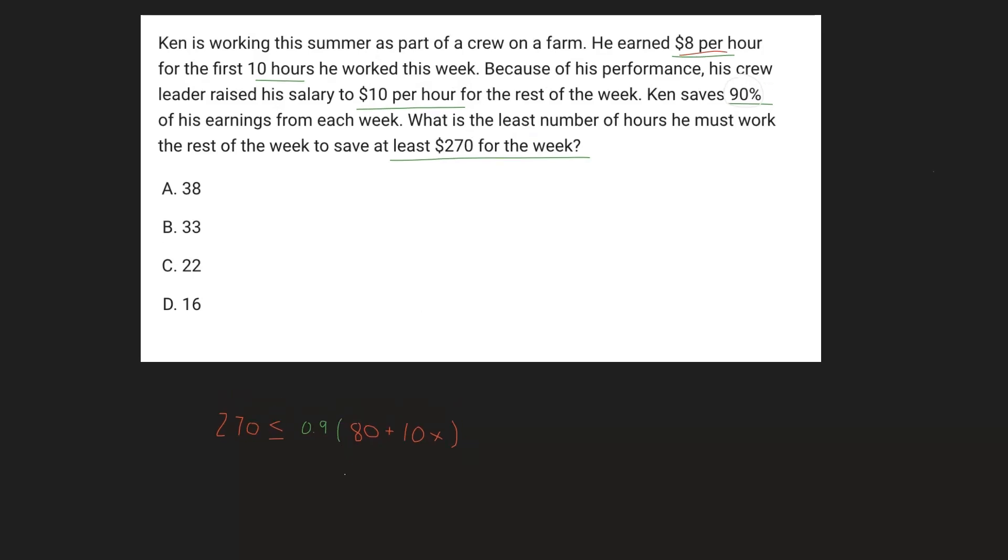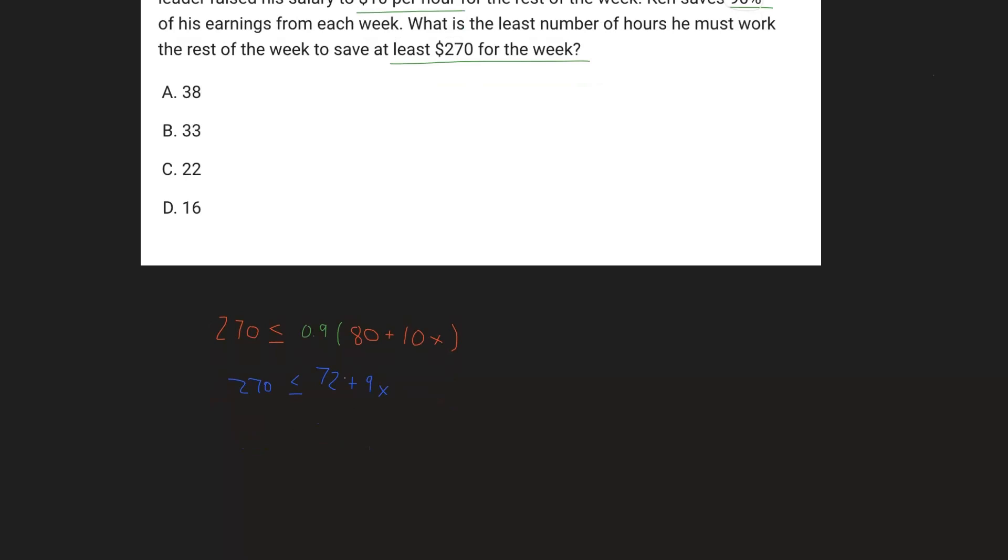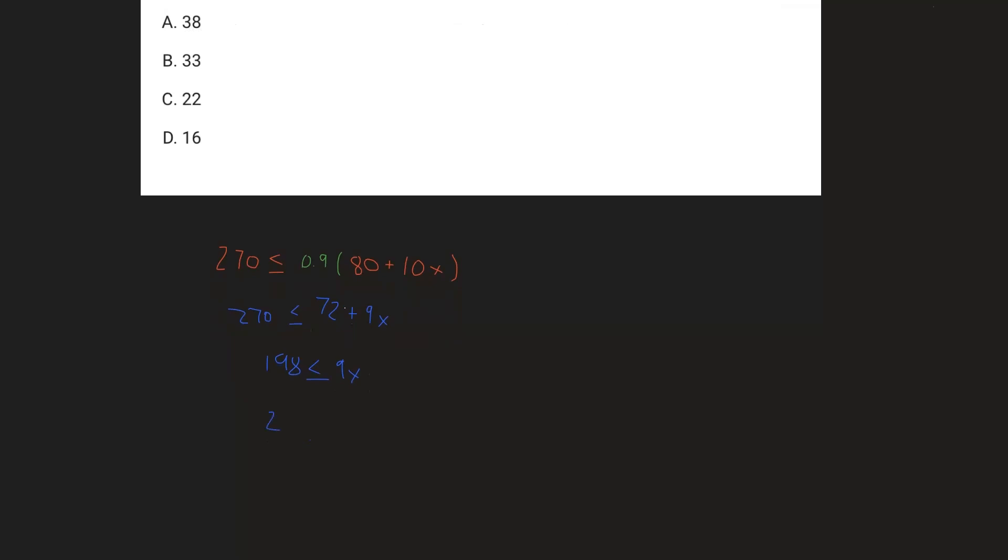All right, so now we just want to simplify this inequality. So 0.9 times 80 is going to give us a value of 72. 0.9 times 10X is going to be plus 9X, set this greater than or equal to 270. And so we want to subtract 72 from both sides because we're isolating for X. And so we get 198 is less than or equal to 9X. Divide both sides by 9 and we get a value of 22 is less than or equal to X.